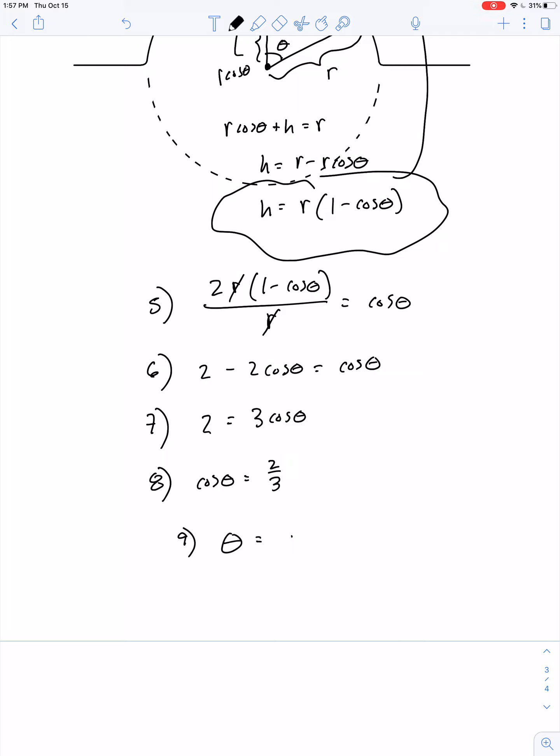Therefore, theta is equal to the inverse cosine of 2 thirds. I'm going to grab a calculator and see what you get. So the angle is about 48.2 degrees.